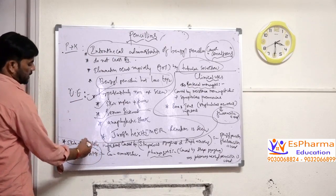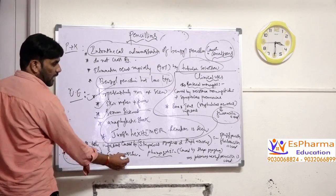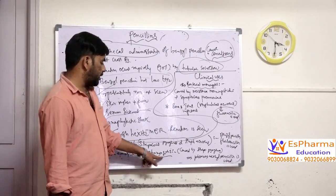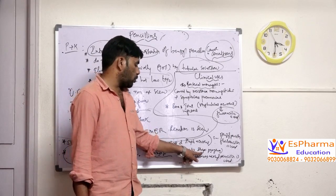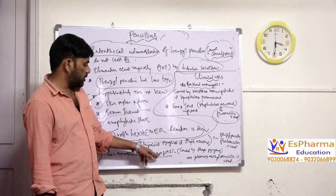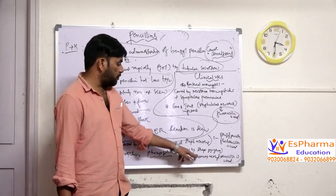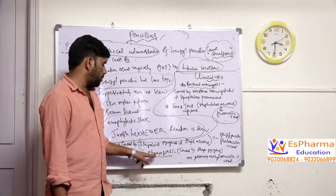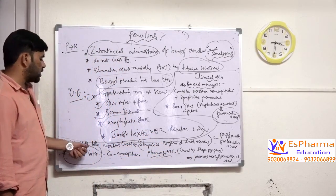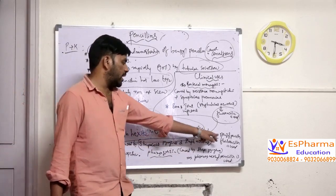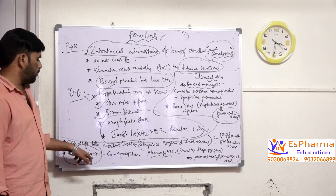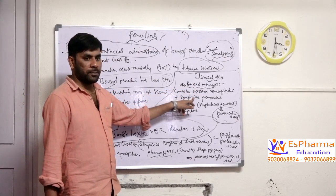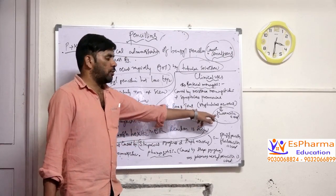For treatment of animal bites we use co-amoxiclav. For treatment of pharyngitis caused by Streptococcus pyogenes, we use phenoxymethylpenicillin. So to summarize: for bacterial meningitis caused by Neisseria and Streptococcus we use penicillin; for bone and joint infection we use flucloxacillin; for animal bites we use co-amoxiclav; and for pharyngitis we use phenoxymethylpenicillin.